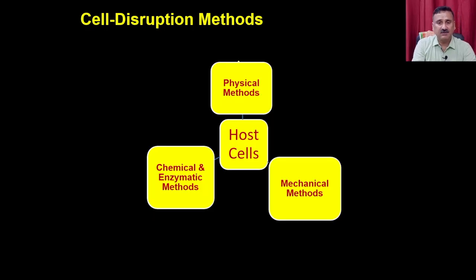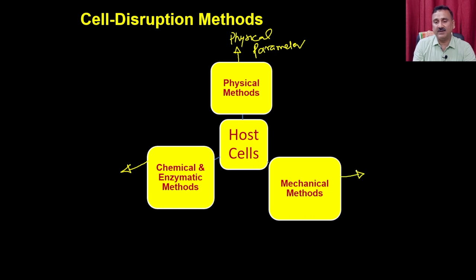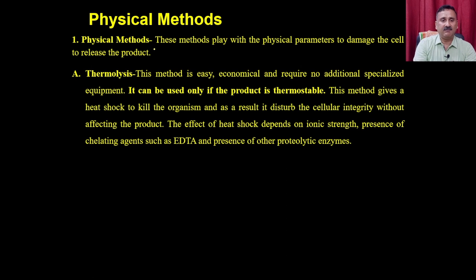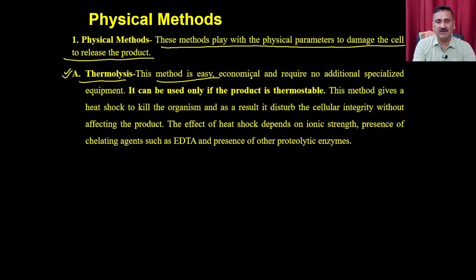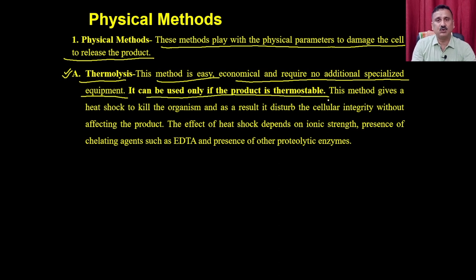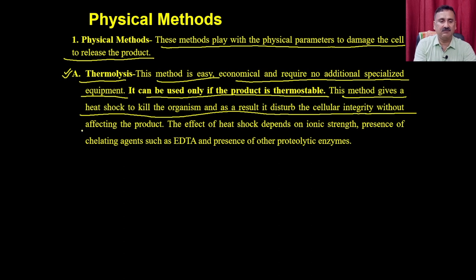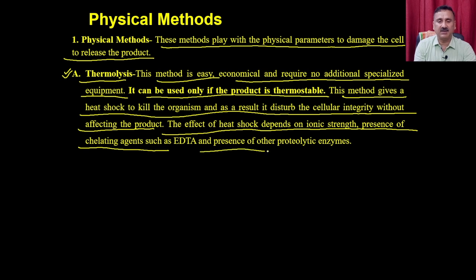The different cell disruption methods include physical methods, chemical or enzymatic methods, and mechanical methods. In physical methods, the physical parameters are varied to damage the cell and release the product. Number one is thermolysis — this method is easy, economical, and requires no additional specialized equipment. It can only be used if the protein of interest is thermostable. It gives a heat shock to kill the organism and disturbs cellular integrity without affecting the product. The effect of heat shock depends on ionic strength, presence of chelating agents such as EDTA, and the presence of proteolytic enzymes.